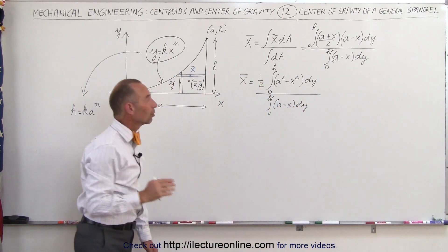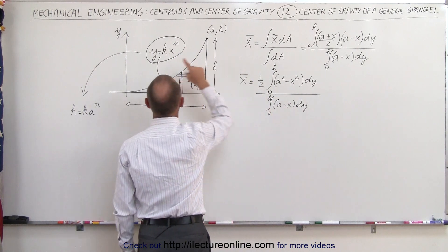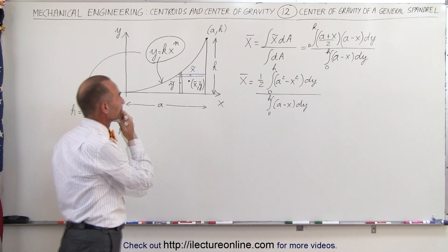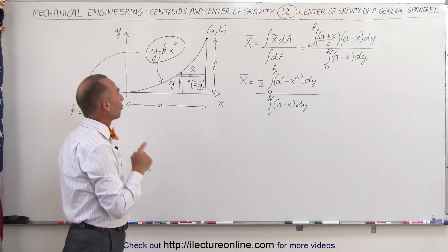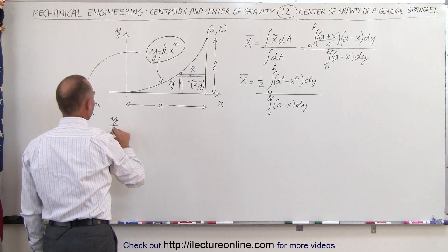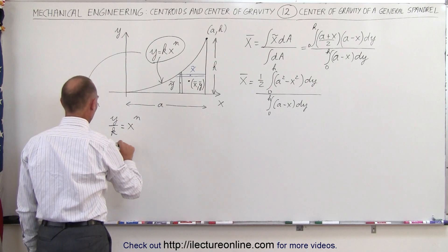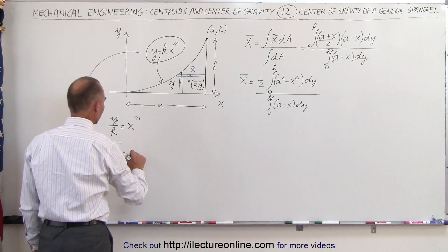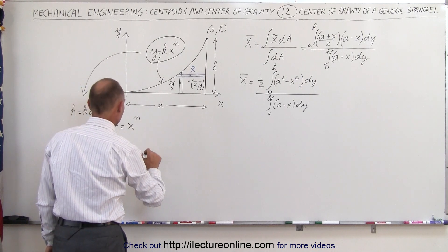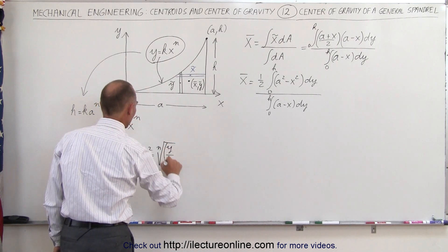Now we're looking at our original equation to try and find some means of replacing x² with some expression of y, and x with some expression of y. Let's take the nth root of both sides. We take this equation and write it as y divided by k equals x to the n power. If we take the nth root of both sides, that would be the nth root of y over k equals x. If we want x², we square both sides — x² can now be written as the nth root of y over k, the whole thing squared.